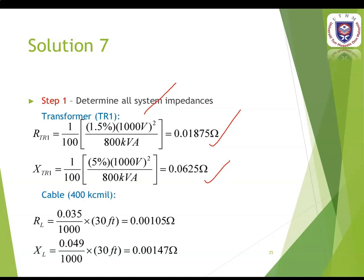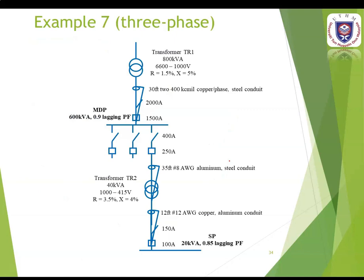For the cable 400 kcmil, you have to do the analysis starting from the source. You refer to this diagram: transformer, then go to the 400 kcmil, then the 8 AWG, then the transformer to 12 AWG. For the cable 400 kcmil, you refer to the 600 volt table. For the three-phase equation there is no factor of 2.